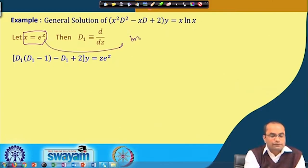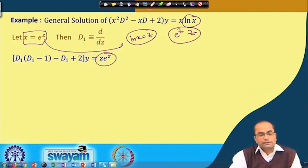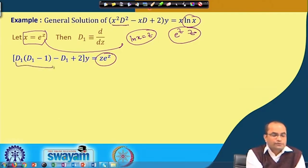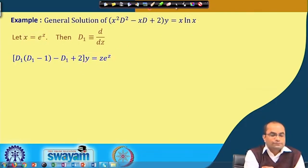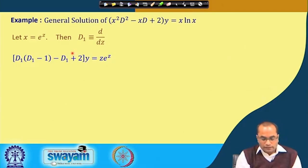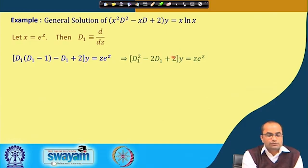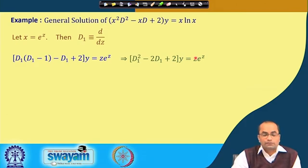The right-hand side x·ln(x) becomes e^z · z, since x = e^z and ln(x) = z. So our new equation in z is: [D₁(D₁-1) - D₁ + 2]y = z·e^z. Simplifying: D₁² - D₁ - D₁ + 2, which gives D₁² - 2D₁ + 2 operated on y equals z·e^z. This equation now has constant coefficients — 1, -2, and 2.